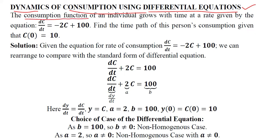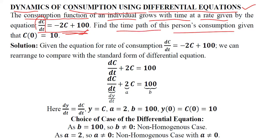There is a consumption function of an individual and the consumption grows over time at a rate given by a certain differential equation. The rate of change of consumption with respect to time is equal to this certain expression. We are required to find the time path of the individual's consumption, and we are also given the initial condition using which we can find the definite solution.